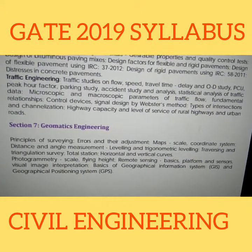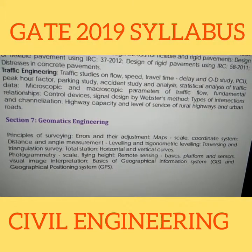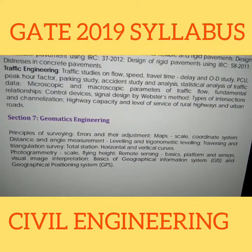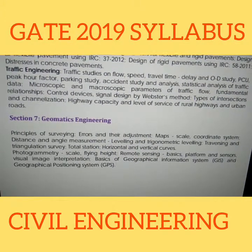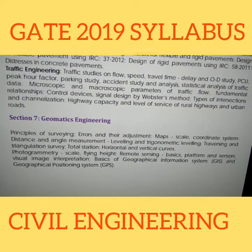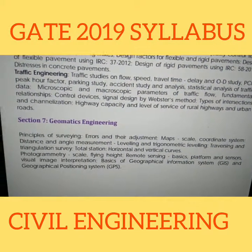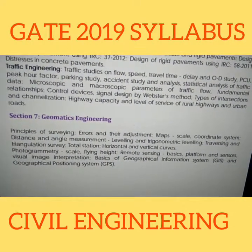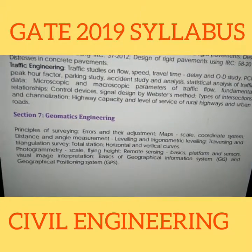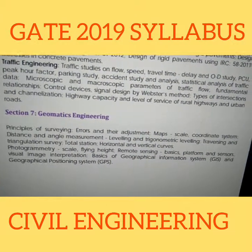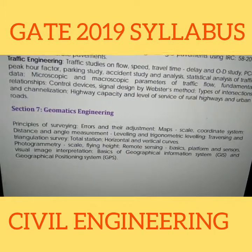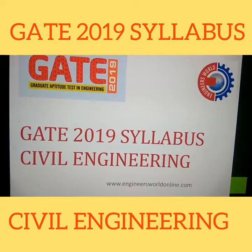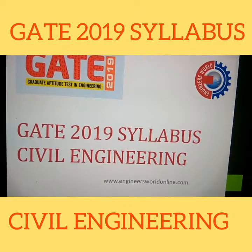Section 7: Geomatics Engineering — Principles of Surveying, Errors and Their Adjustment, Map Scale, Coordinate System, Distance and Angle Measurement, Leveling and Trigonometric Leveling, Traversing and Triangulation Survey, Total Station, Horizontal and Vertical Curves, Photogrammetry — Scale, Relief Displacement, Height Determination, Remote Sensing — Basic Platforms and Sensors, Visual Image Interpretation, Basics of Geographic Information System and Global Positioning System. These are the syllabus topics for GATE 2019 Civil Engineering.